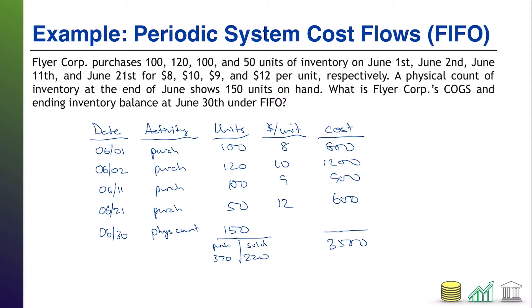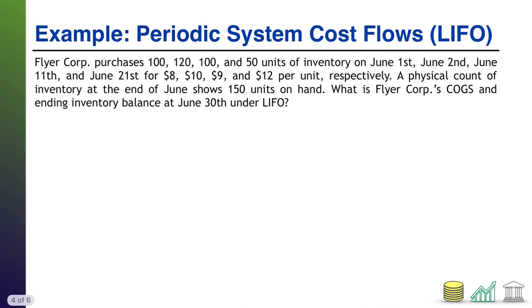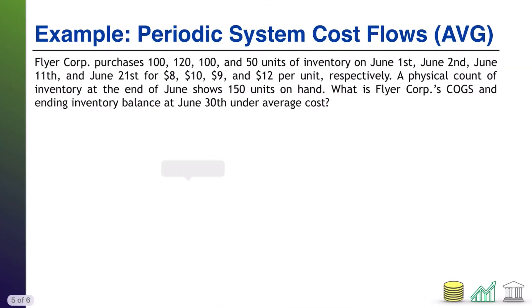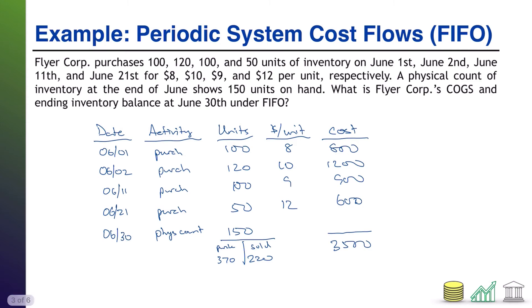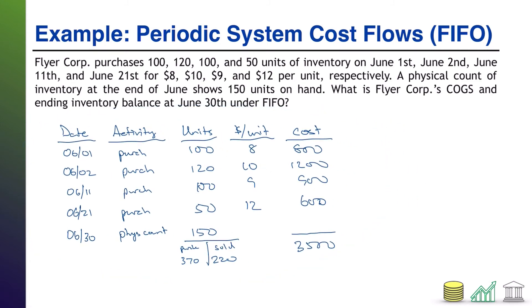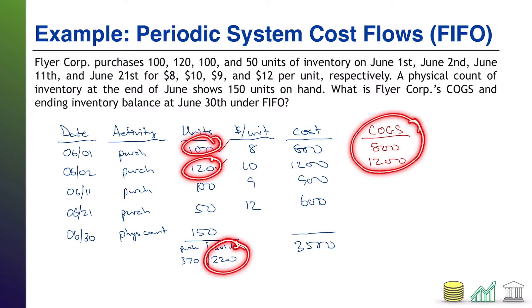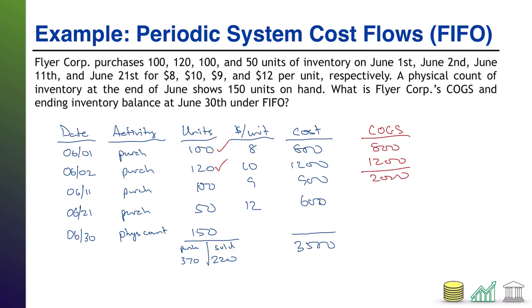At this point I have all the information I need to calculate cost of goods sold and ending inventory. Under FIFO, we assume first in, first out — what we bought first is what we sold. We know we sold 220 units. So the whole first batch (100 units) is gone: COGS gets $800. The whole second batch (120 units) is gone: COGS gets another $1,200. That's 100 plus 120 = 220 units, which is exactly how many we sold. Total cost of goods sold under FIFO: $2,000.